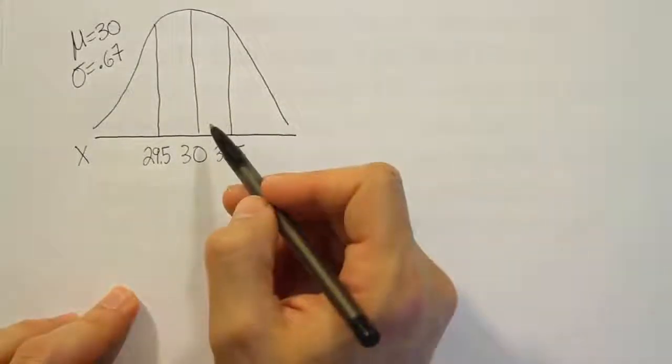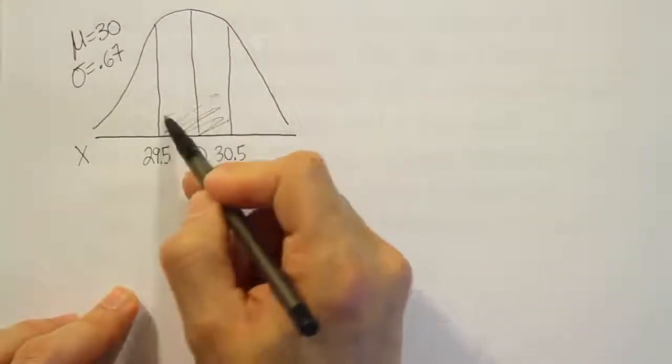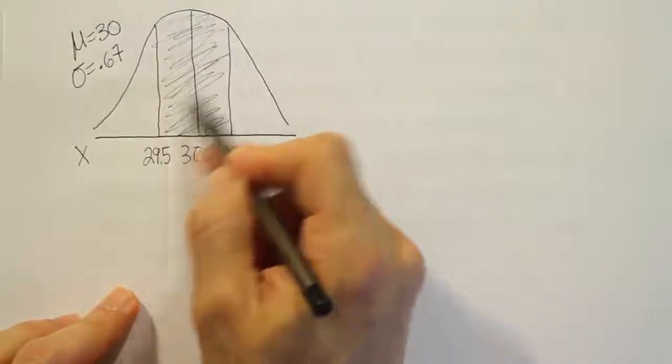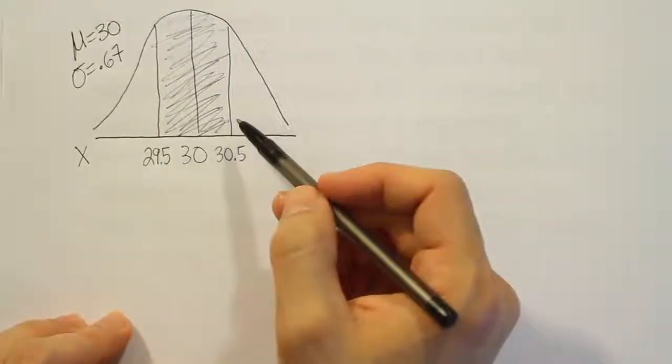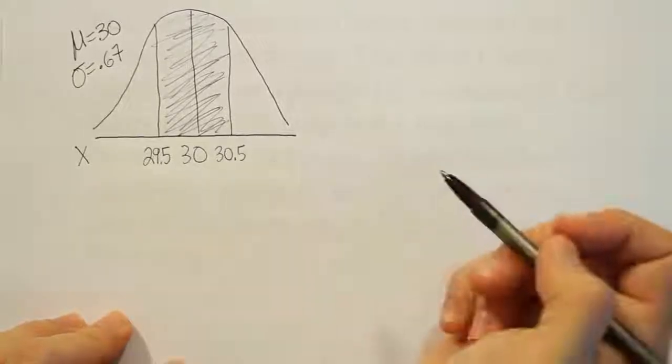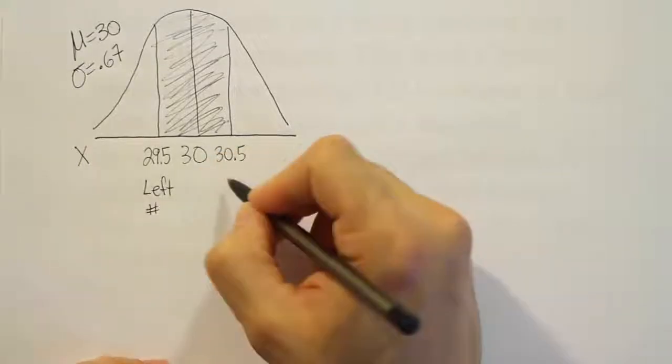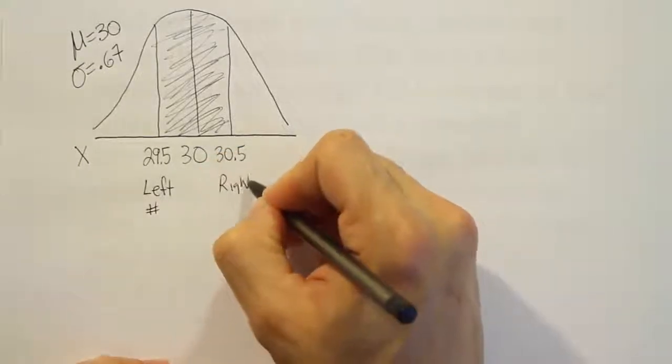We're looking for the probability that the fuel economy is between these two values. Since we're looking for the probability that it's between those two values, my shaded area is the area between the two numbers. This will be our left number for the shaded area, and this will be the right number for the shaded area.